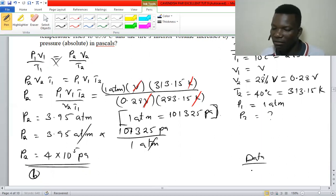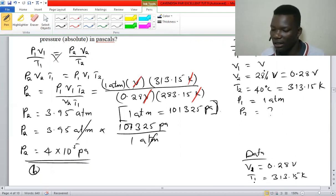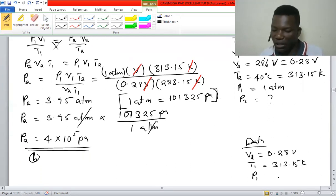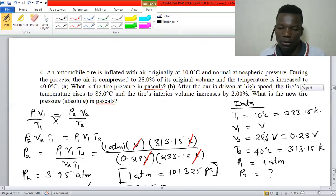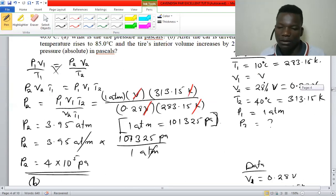For part B data, we have V1 is 0.28 V, T1 is 313.15 K, and the initial pressure is the pressure we found: 4 times 10 to the power 5 pascals. The question says temperature rose to 85 degrees.